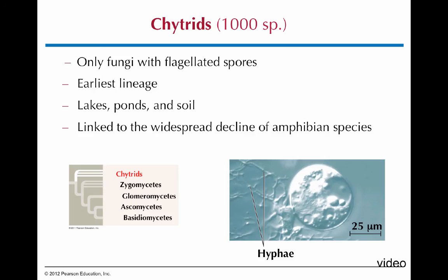Chytrids have flagellated spores, which is unusual and reminiscent of the nuclearids. They are the earliest lineage to diverge and live in moist environments like lakes and ponds. Their most important feature is that they are killing amphibians in large numbers — there's a video from the California Academy of Sciences about the decline of amphibian species due to chytrid infection.